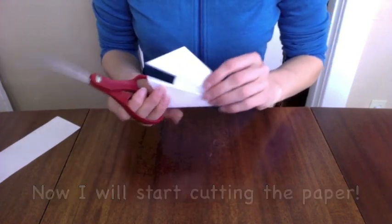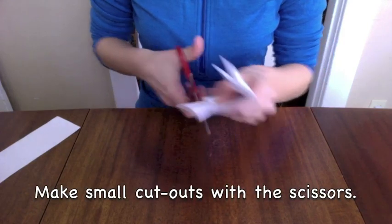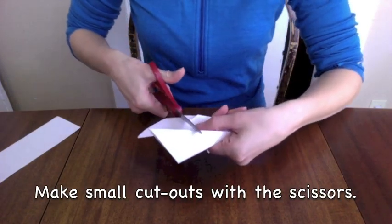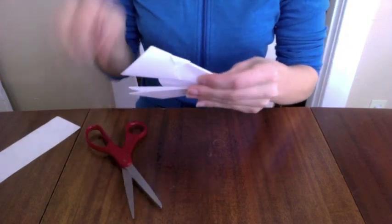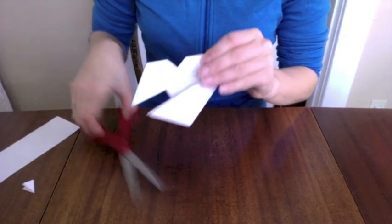Once you have your paper folded in the direction that you want, you're going to make small cutouts. So here I made a triangle cutout. Just take that aside.